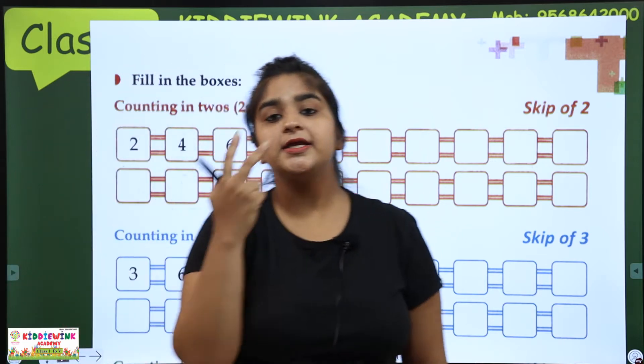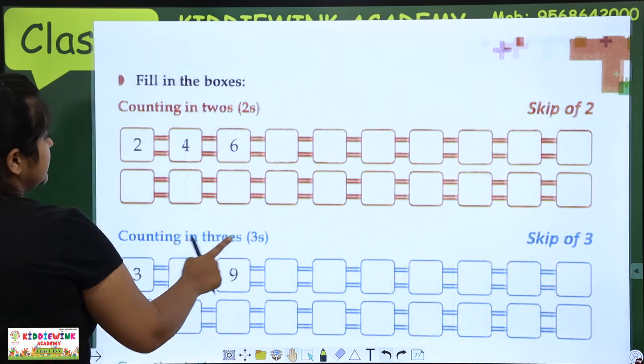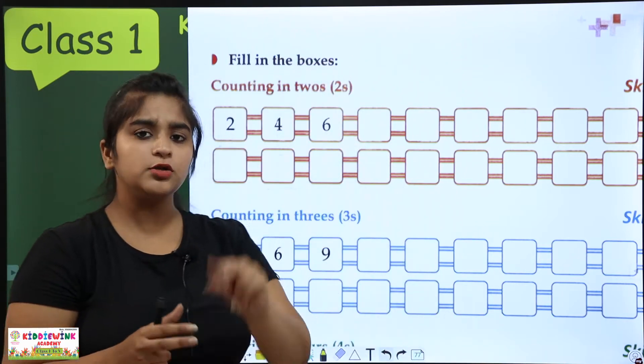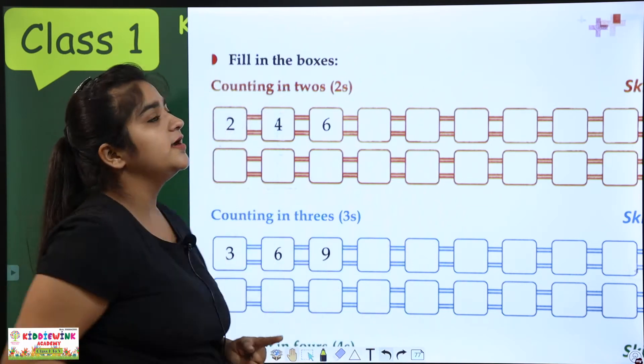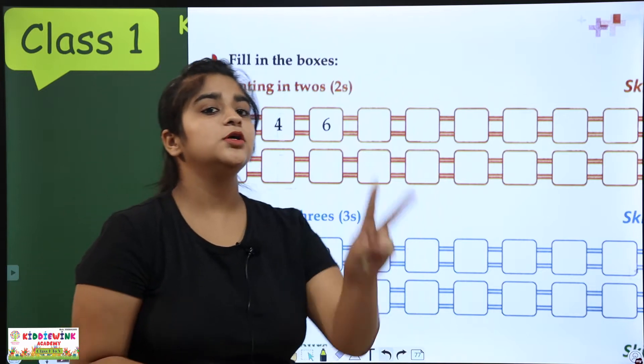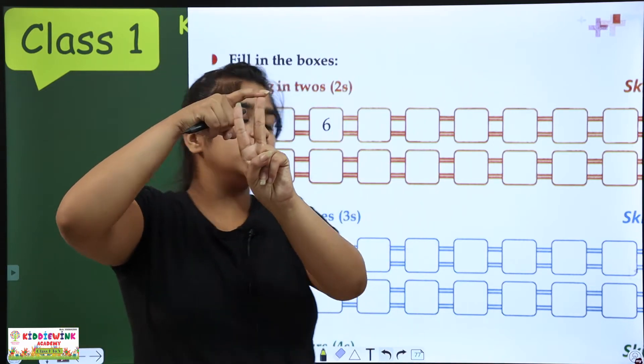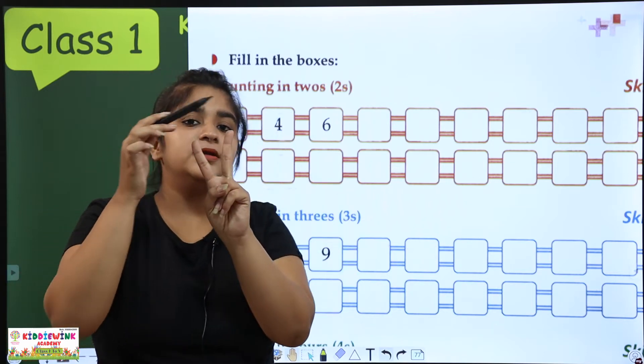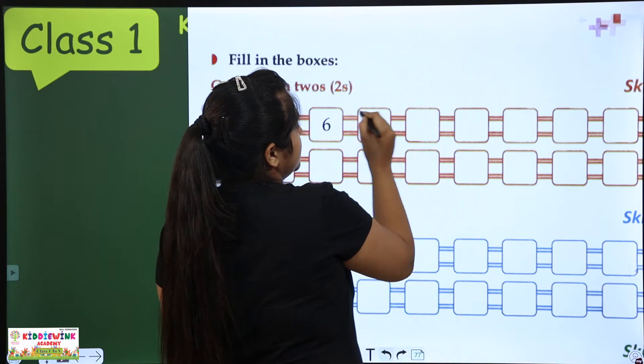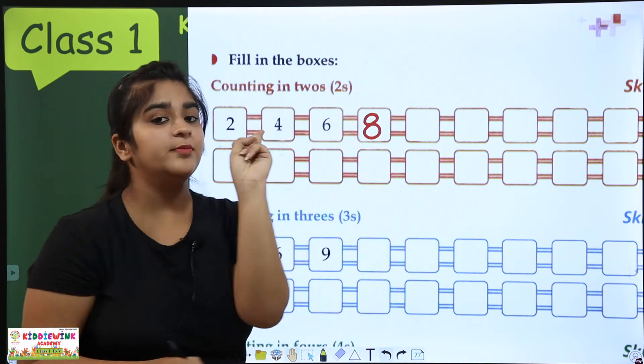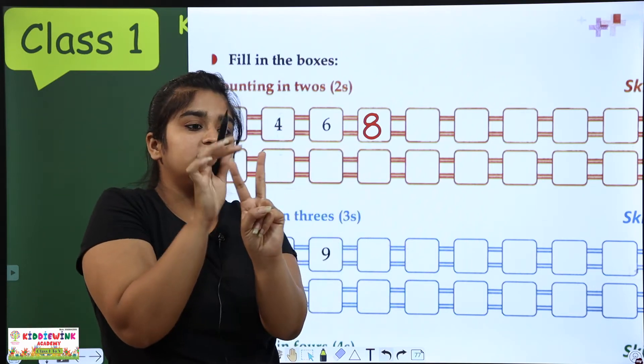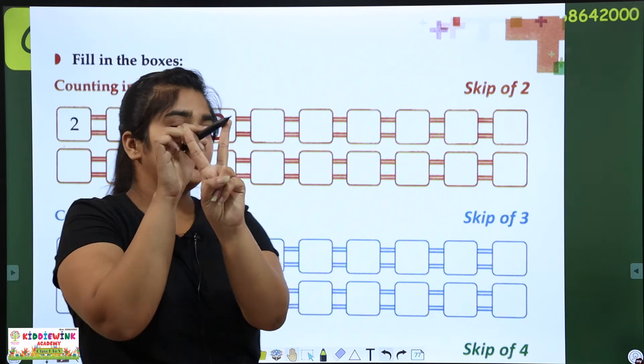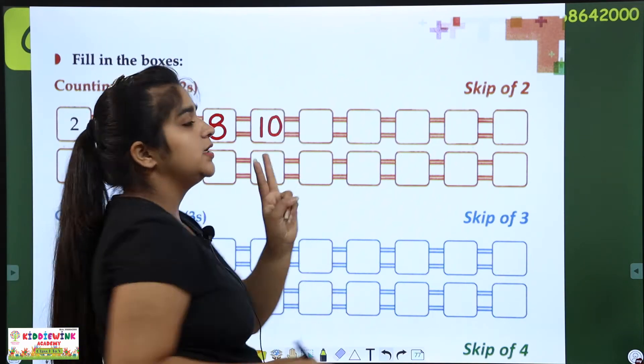Counting in 2s. That is, we have to leave the gap of 2. Like, what is the work done? 2. After 2, we have to leave the gap of 2. First digit is 2. 2, then 3, 4. What is 4? 4 is written. 5, 6. 6 is written. 7, 8. What is the answer? 8. We have written 8. When we have written the answer, the number of fingers is connected. The number of digits while counting on the number, we need to write our number. Okay? After 8, count on the number of fingers after 8. 9, 10.